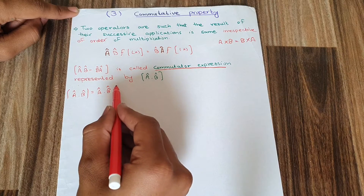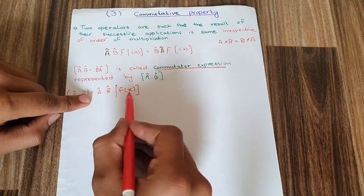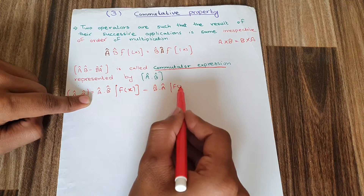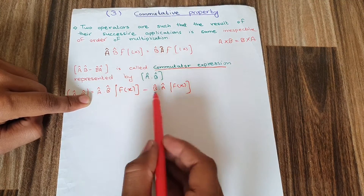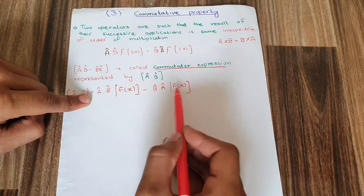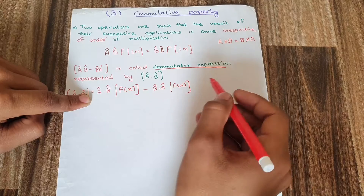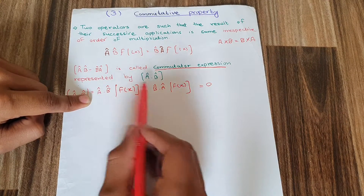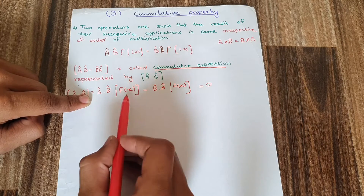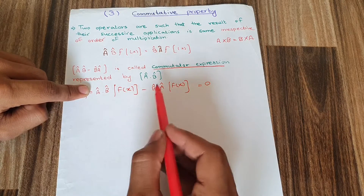If I apply two operators A and B on f(x), and I subtract B·A·f(x) from A·B·f(x), the answer should be equal to zero, since these operators commute with each other. Here A is applied first in one case, and B is applied first in the other. The answer of A·B·f(x) and B·A·f(x) is the same. I will explain this with an example.